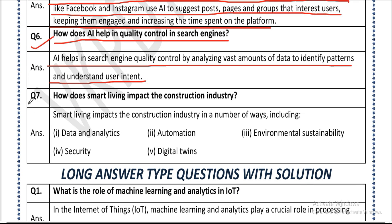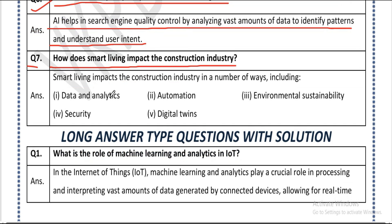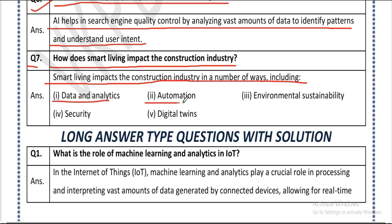Question seven: how does smart living impact the construction industry? Answer: smart living impacts the construction industry in a number of ways, including first, data analytics; second, automation; third, environmental sustainability; fourth, security; and fifth, digital twin.